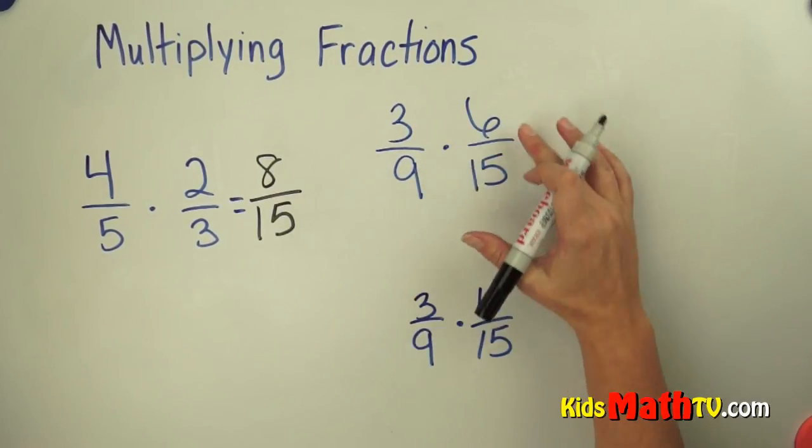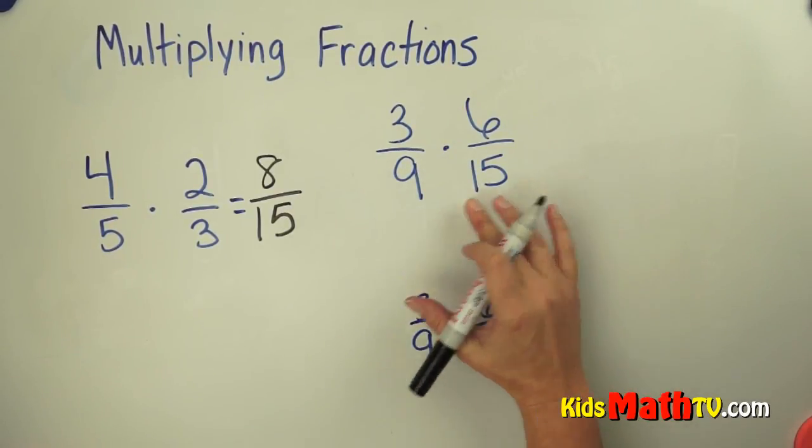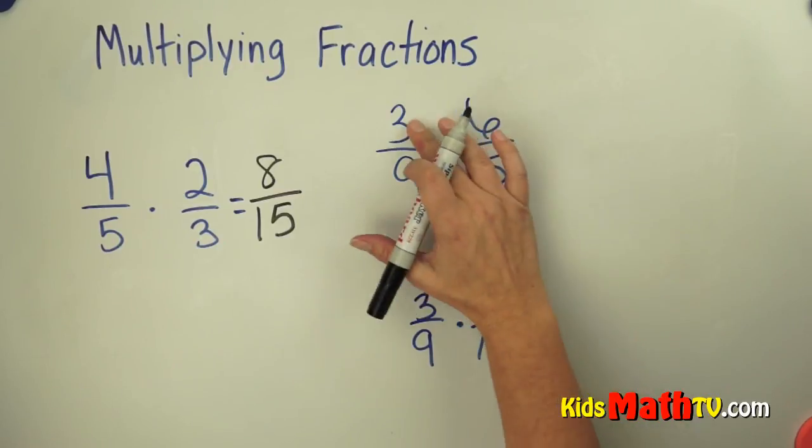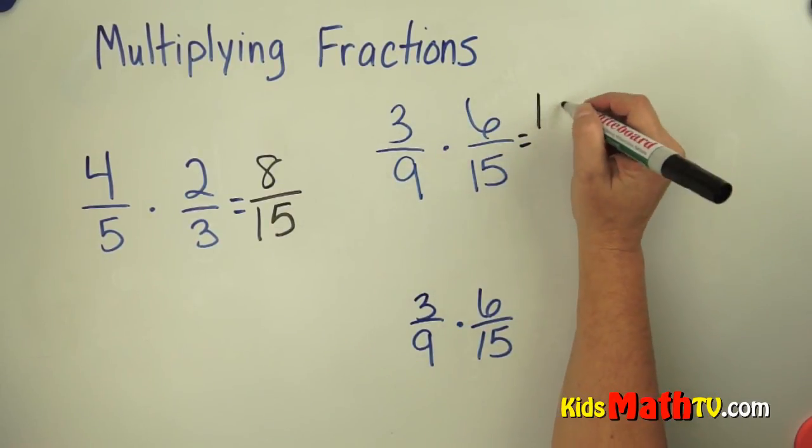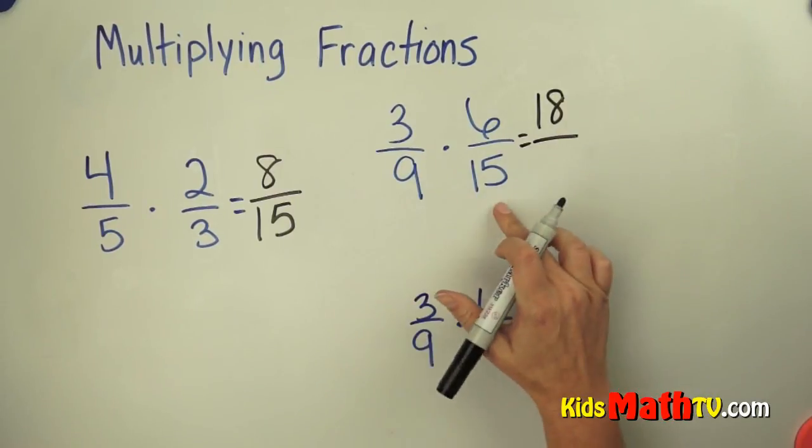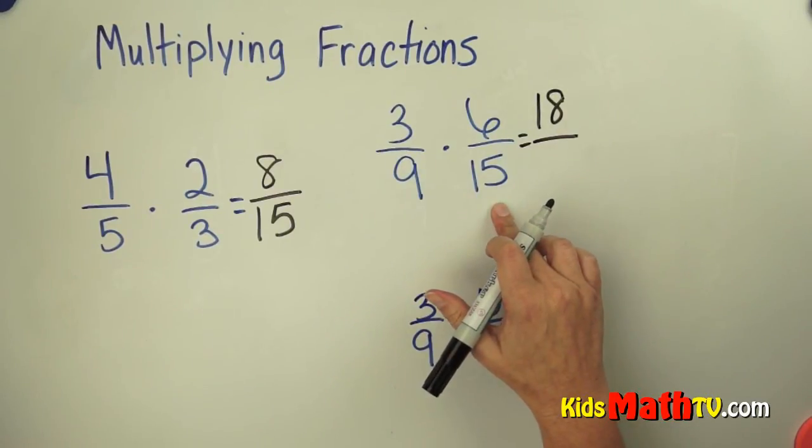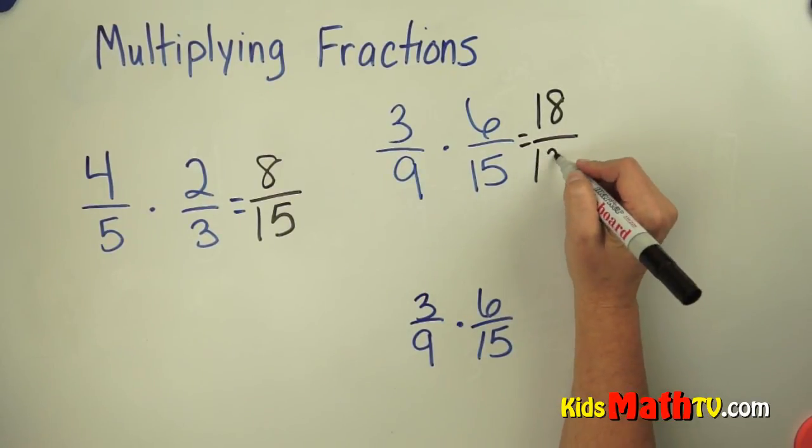Here is another problem: 3 ninths times 6 fifteenths. Again, don't worry about common denominators. Simply multiply the numerators. 3 times 6 is 18. 9 times 15, if we do 9 times 15 we get 135.